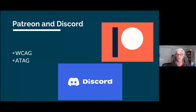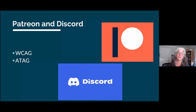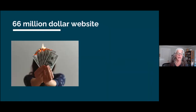Patreon and Discord are two recent structured negotiations where we used the Web Content Accessibility Guidelines as well as the Authoring Tool Accessibility Guidelines. Those are on the settlement tab on my website. And the $66 million website — illustrated by a woman whose face you can't see...